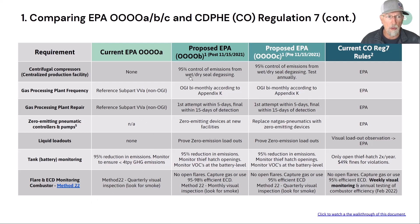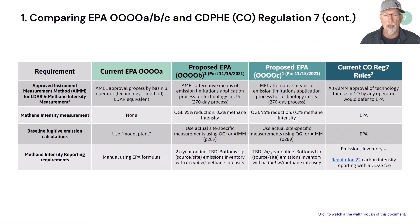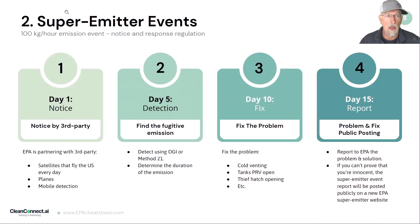On the next page, there are new rules about monitoring of centrifugal compressors and gas processing plant frequency. There's also Appendix K, which I have another slide on. Under Quad O-C, you're now required to replace your natural gas pneumatics with zero-emitting devices. There are new requirements for liquid loadouts — in Colorado, you have to do visual loadout observation, and basically all loadouts have to be at zero emissions. There has to be tank battery monitoring, and you have to have combustors on everything. There is also a new methane intensity concept, which I'll get into on the reporting side.